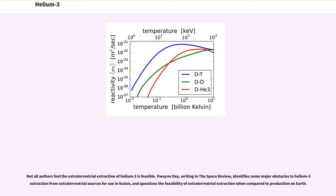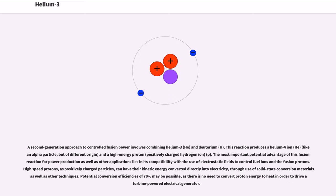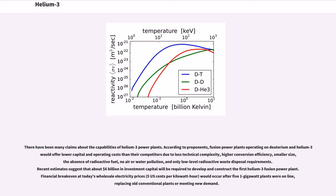A second-generation approach to controlled fusion power involves combining helium-3 and deuterium. This reaction produces a helium-4 ion, like an alpha particle but of different origin, and a high-energy proton, positively charged hydrogen ion. The most important potential advantage of this fusion reaction for power production as well as other applications lies in its compatibility with the use of electrostatic fields to control fuel ions and the fusion protons. High-speed protons, as positively charged particles, can have their kinetic energy converted directly into electricity, through use of solid-state conversion materials as well as other techniques. Potential conversion efficiencies of 70% may be possible, as there is no need to convert proton energy to heat in order to drive a turbine-powered electrical generator.